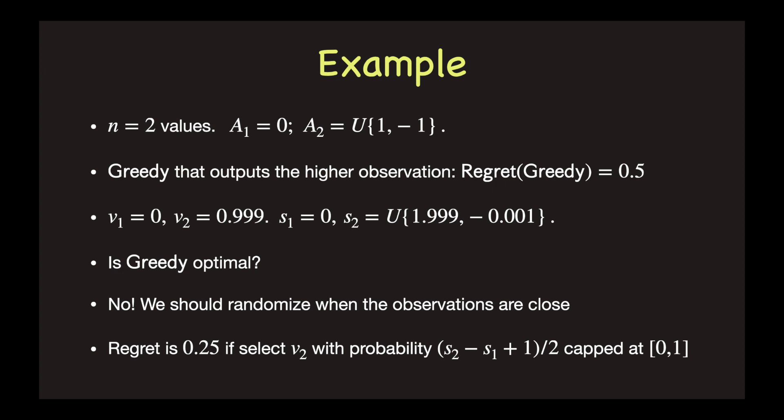We naturally ask, is this optimal? Well, the answer is no. We should actually randomize when the observations are close. And it turns out the optimal regret here is much lower than 0.25.